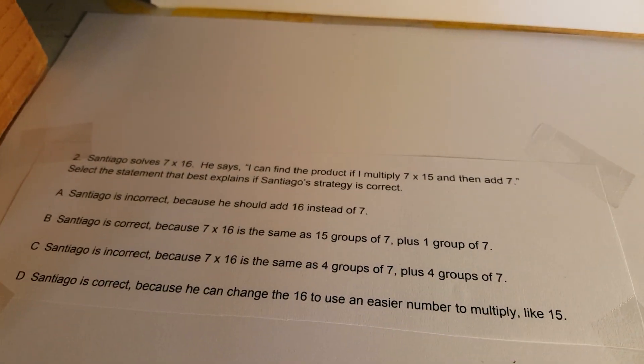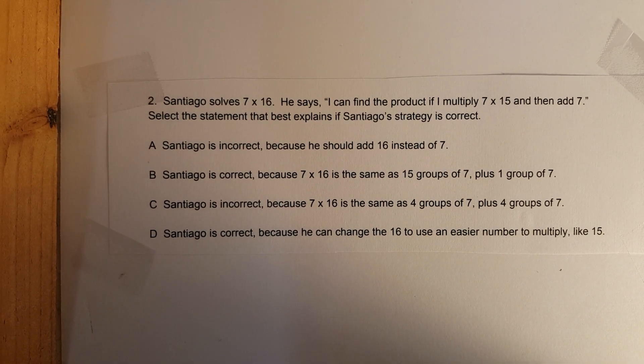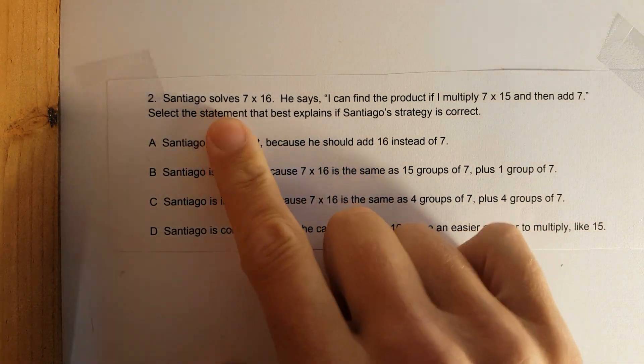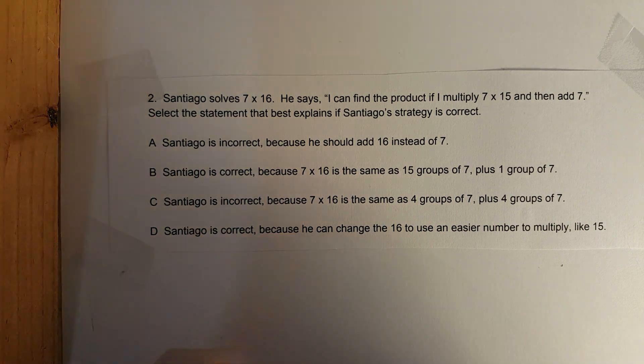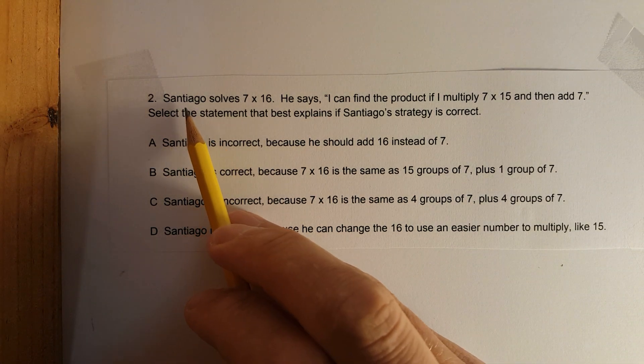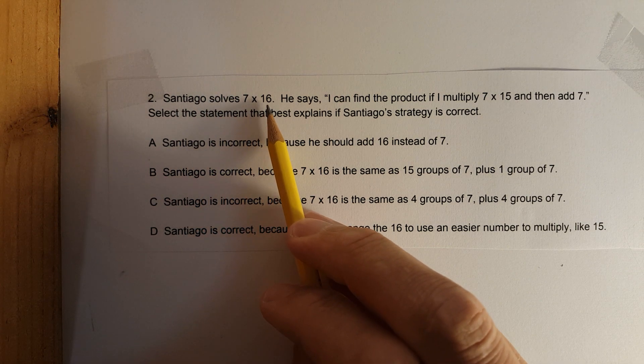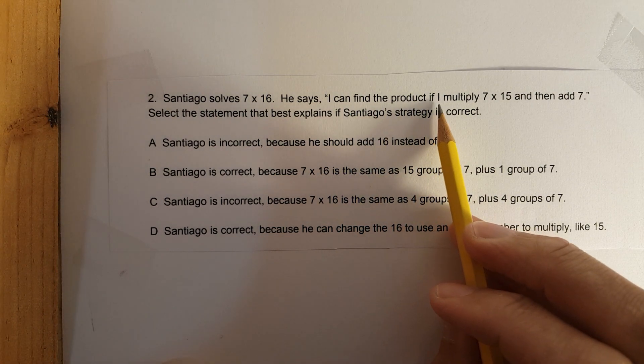Alright, let's set it up. Okay, here we go. First off, just gonna read the problem straight out loud in each choice, and then we're gonna break it down and go through all the different strategies. Follow along with the pencil please. Santiago solves 7 times 16. He says, I can find the product if I multiply 7 times 15 and then add 7.